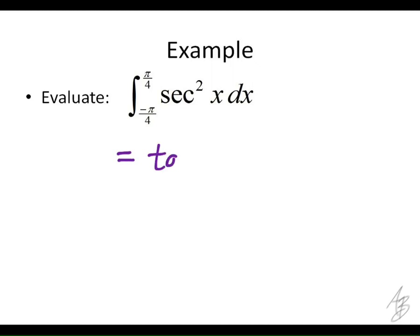Tangent. So the antiderivative of secant squared of x is just tangent of x. And we want to evaluate that at pi over 4 and negative pi over 4. What quadrant is... We know pi over 4 is in the first quadrant. What quadrant is negative pi over 4 in? It's in the fourth. Is that positive or negative in the fourth quadrant? Tangent. It's going to be negative.